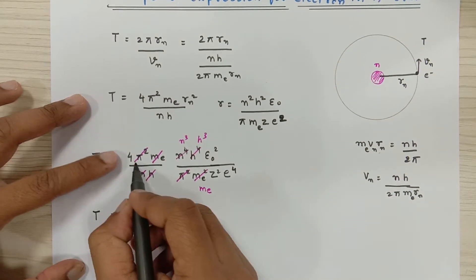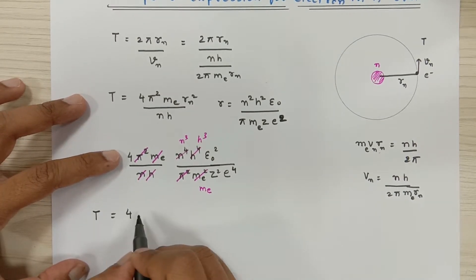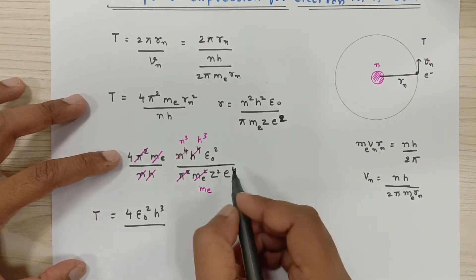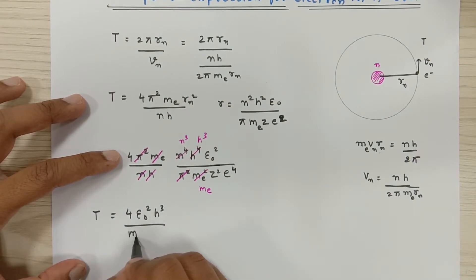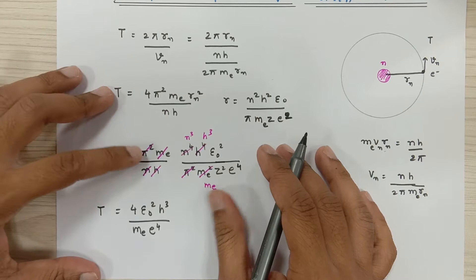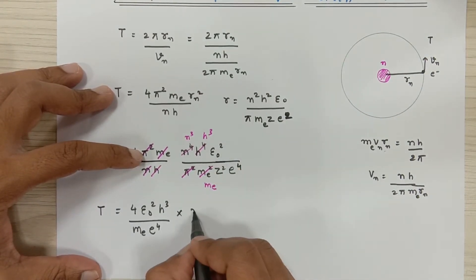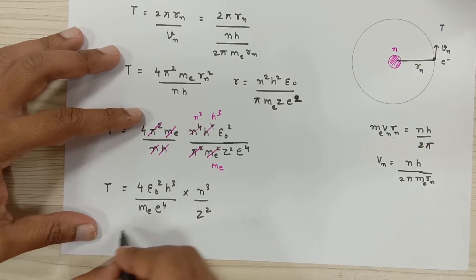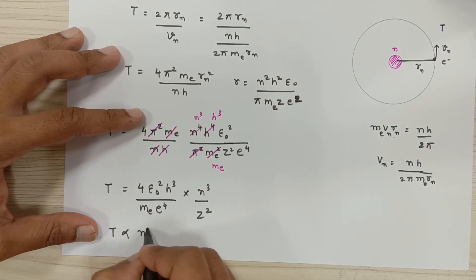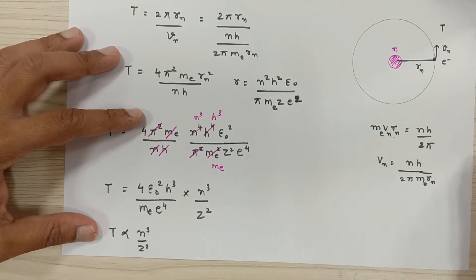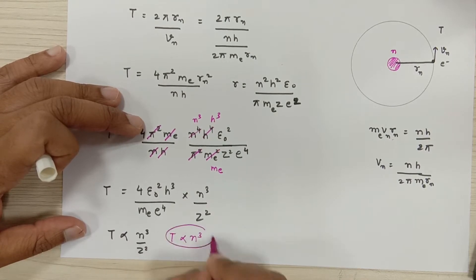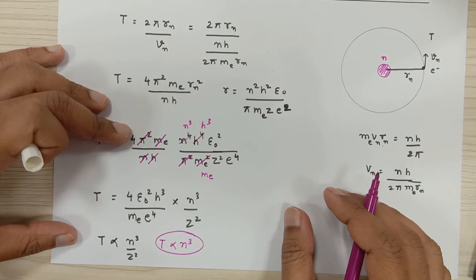Let me write down the final time period expression: that is equal to 4ε₀²h³, then at the bottom I have e⁴mₑ, and multiplied by n³ upon z². So as you can see, all these things are constant, so you can also state that time period is proportional to n³ upon z². And even you can make a point that time period is proportional to n³ for a given atom, because for a given atom the value of z would be constant.